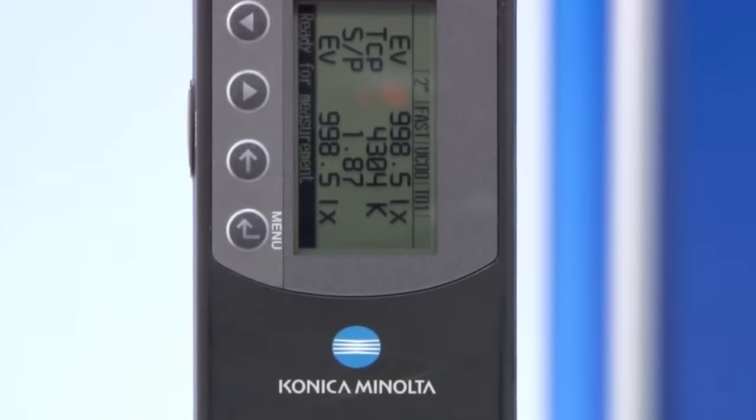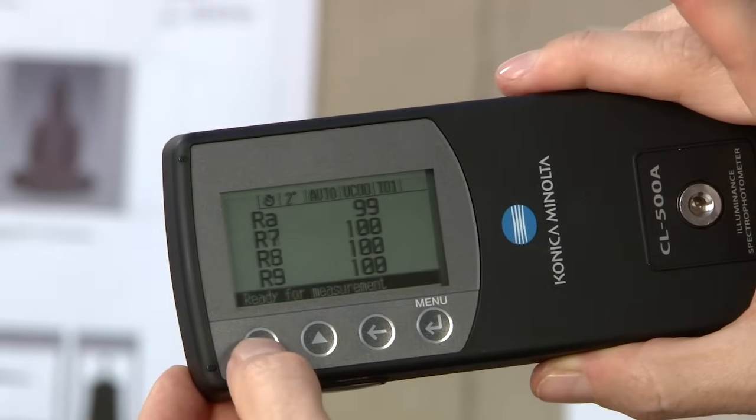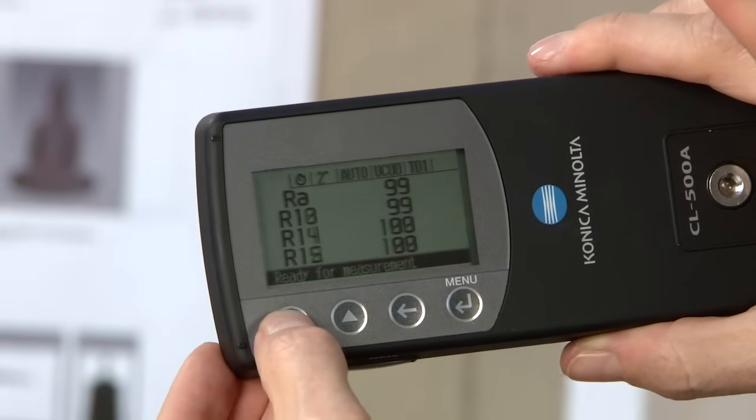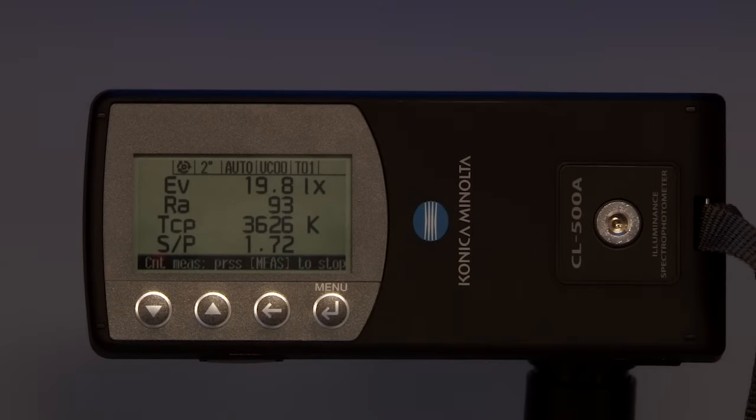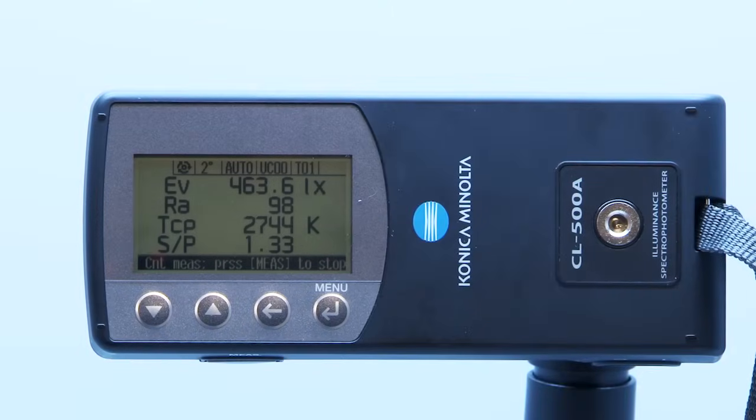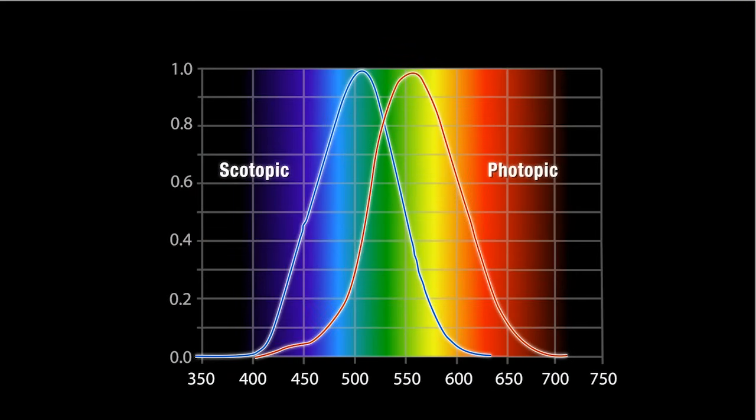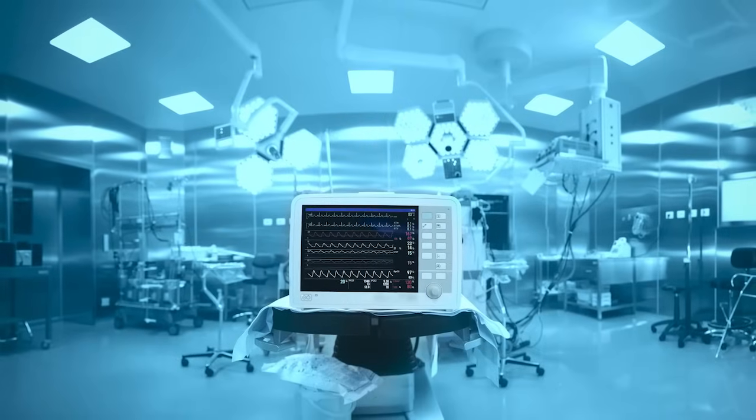This powerful device measures the general color rendering index as well as the individual R1 through R15, color temperature, illuminance, chromaticity, and the scotopic-photopic ratio. SP ratio is a growing requirement in specifications and documents.